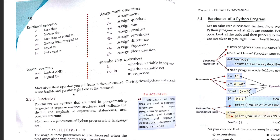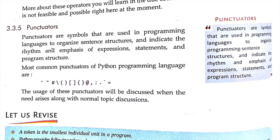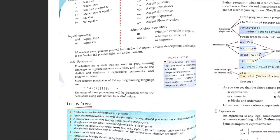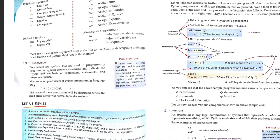Next, punctuators. Punctuators are symbols used in programming languages to organize program sentence structure and indicate rhythm and emphasis in expressions, statements, and program structure. The most common punctuators in Python are: quotation marks, hash, slash, brackets, square brackets, curly brackets, and at-the-rate (@). You have to learn these punctuators because they will be used in upcoming chapters.